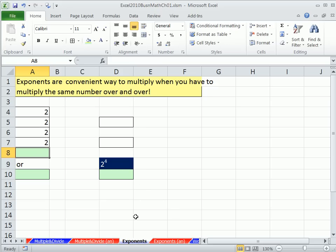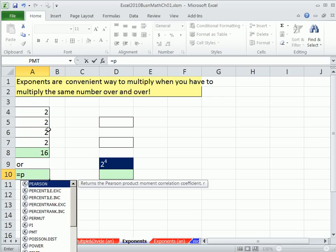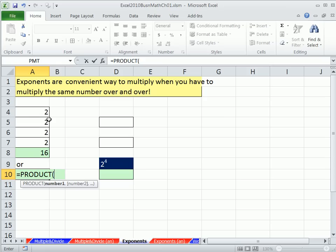In this video, we want to talk about exponents. We're on the exponent sheet. Exponents is just a quick way to do multiplying. If you're multiplying four twos, you could go two times two times two times two. Or as we saw last video, you could use the product function and multiply them together to get 16.